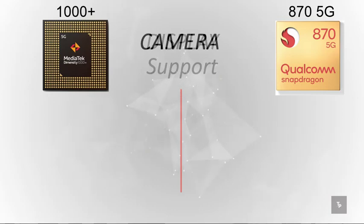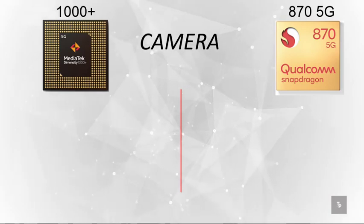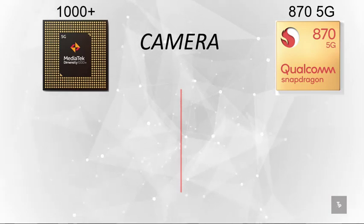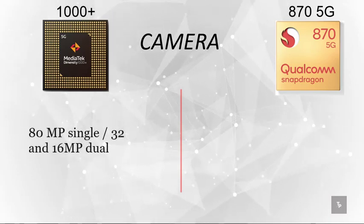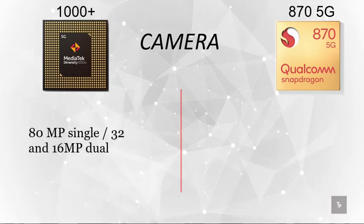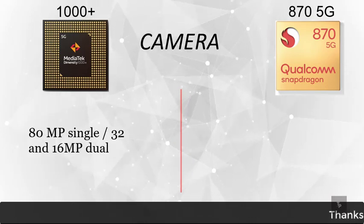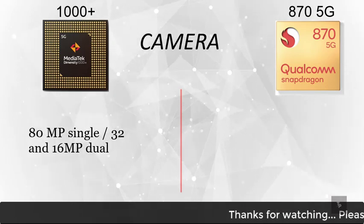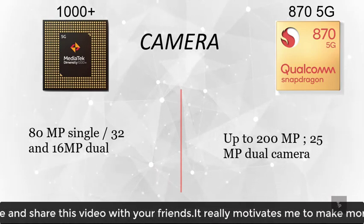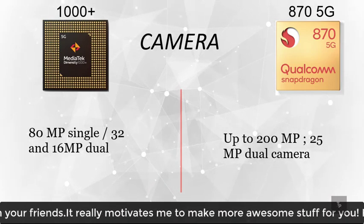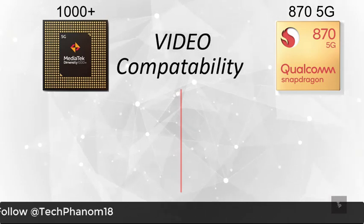On the camera side, the MediaTek Dimensity 1000 Plus supports up to an 80-megapixel single camera, or a 32-megapixel and 16-megapixel dual-camera setup. The Snapdragon 870 supports up to 200 megapixels with a 25-megapixel dual-camera configuration.